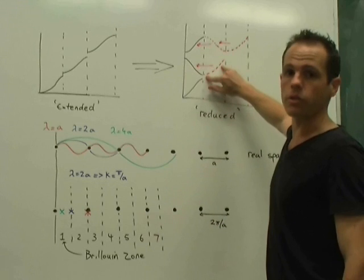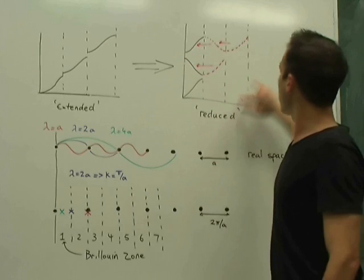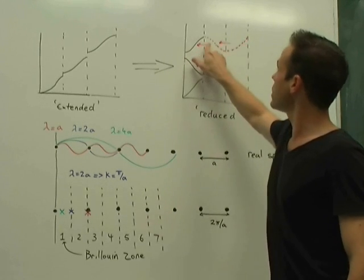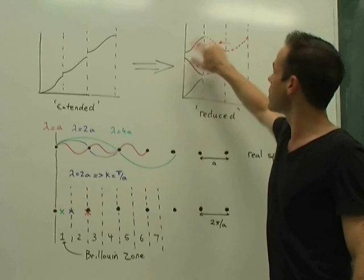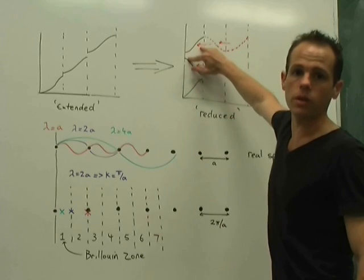So this first band here is mirror reflected around the first Brillouin zone edge back into the first Brillouin zone, and this third band up here in the third Brillouin zone gets reflected into the second zone and then reflected again into the first zone, and so it retains its original shape when it comes across.